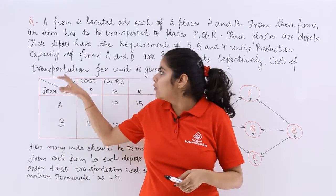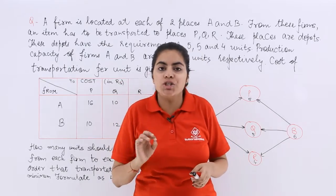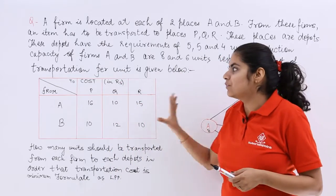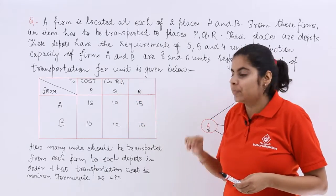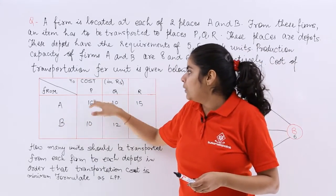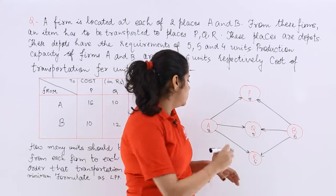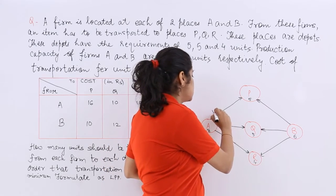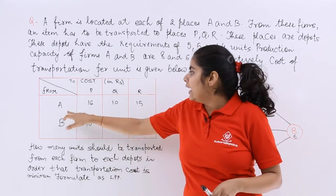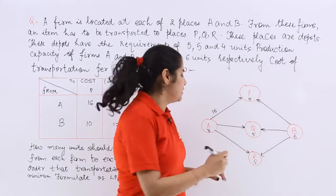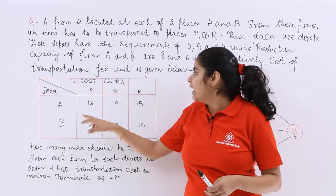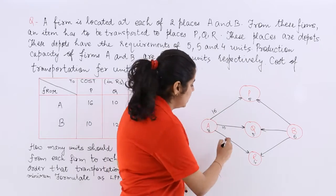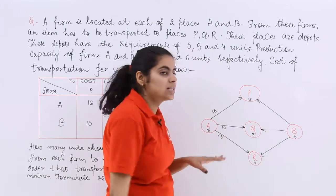Respectively, cost of transportation per unit is given below. So this is the table from and to cost P, Q, R. Now A to P the cost is 16. A to Q cost is 10. Then A to R cost is 15.